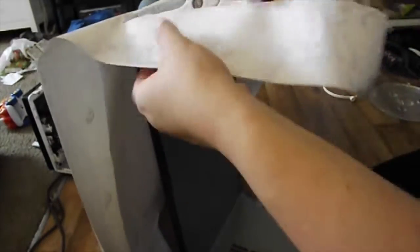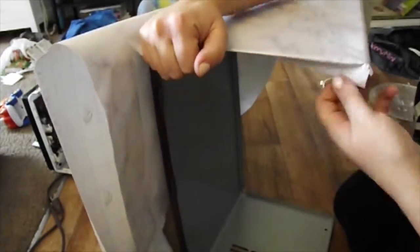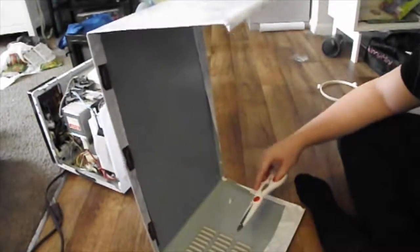And then I am trimming off the edges to make sure that I have just enough to wrap around. We don't want too much material underneath this microwave. And then we're just gonna fold that over and press it down smoothly.